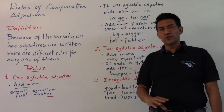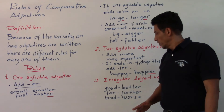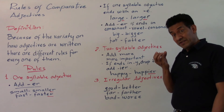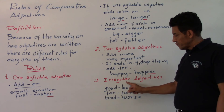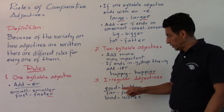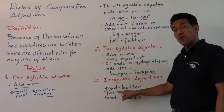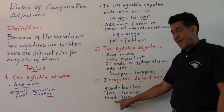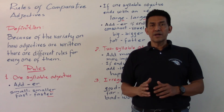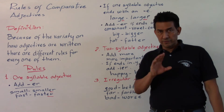The last category is irregular adjectives. They are called irregular because the base form of the adjective is completely different in its comparative form. For example: good → better, bad → worse, far → farther. See you next class, where we will continue studying and expanding the use of these rules. Bye.